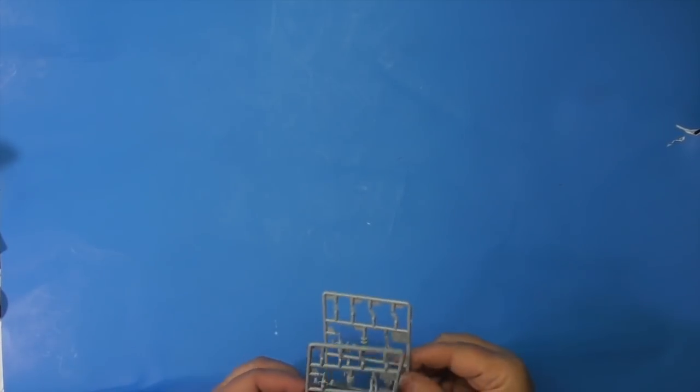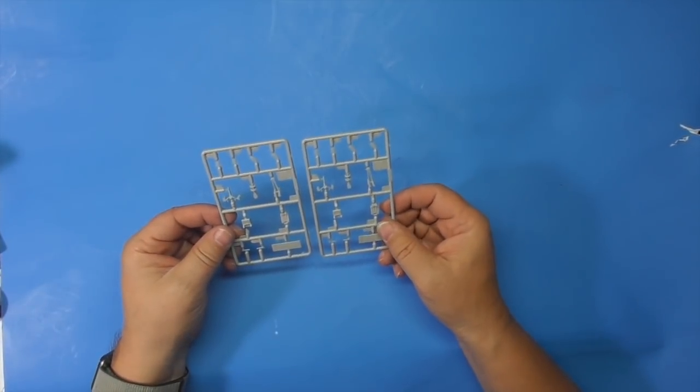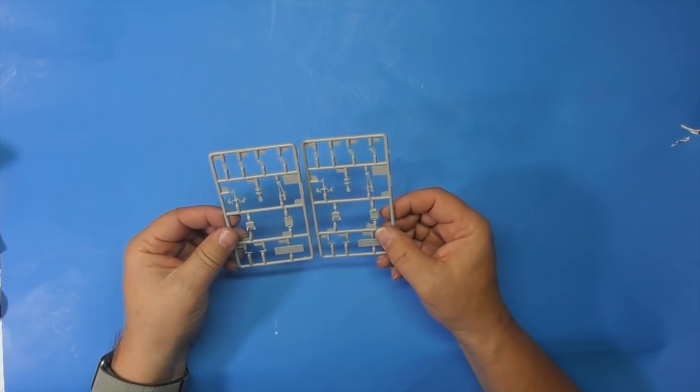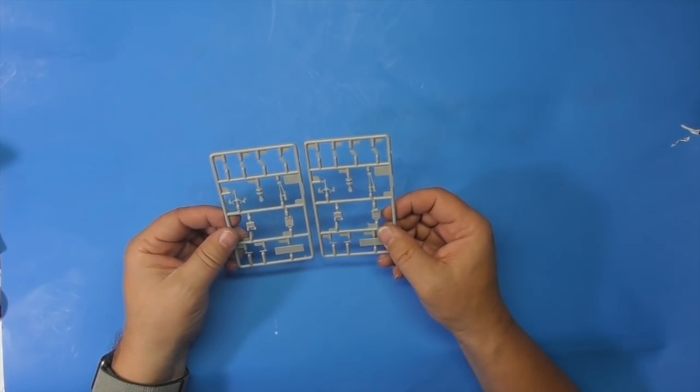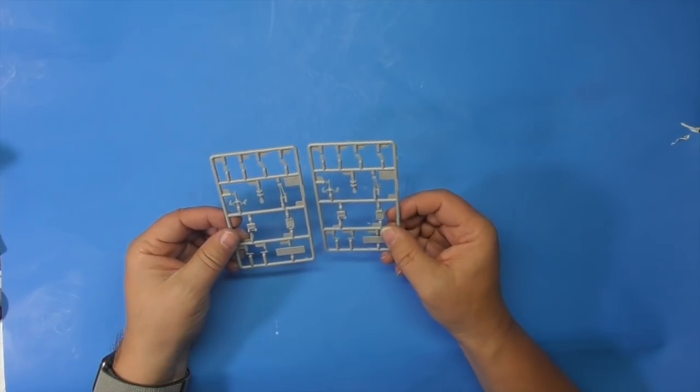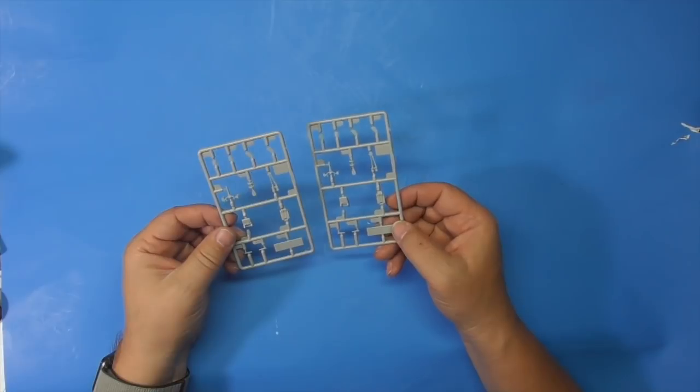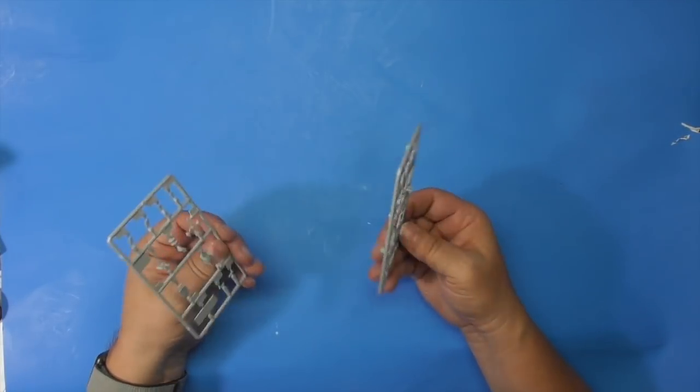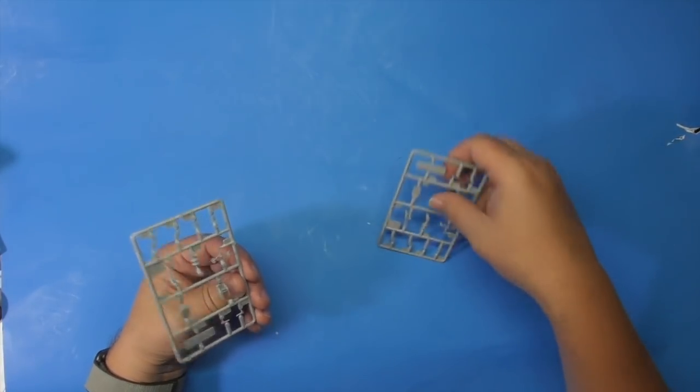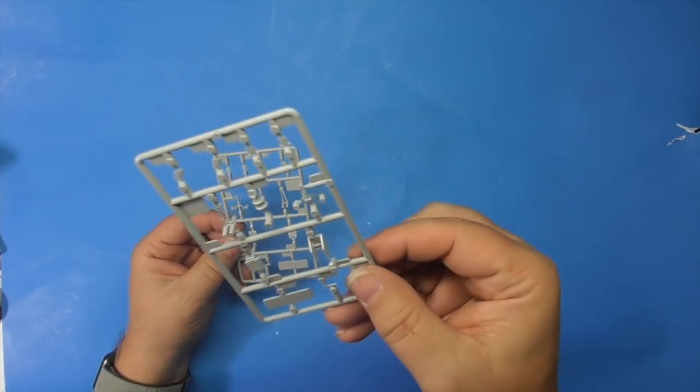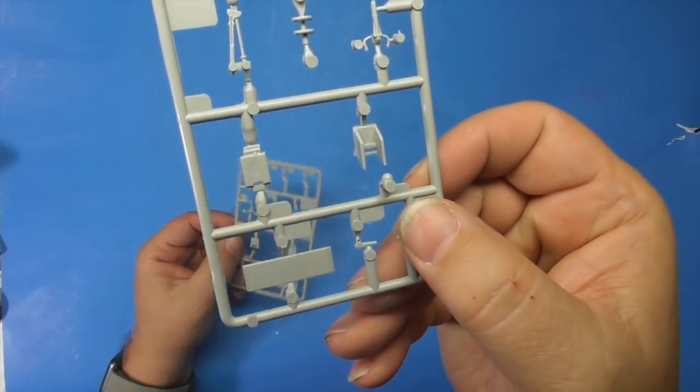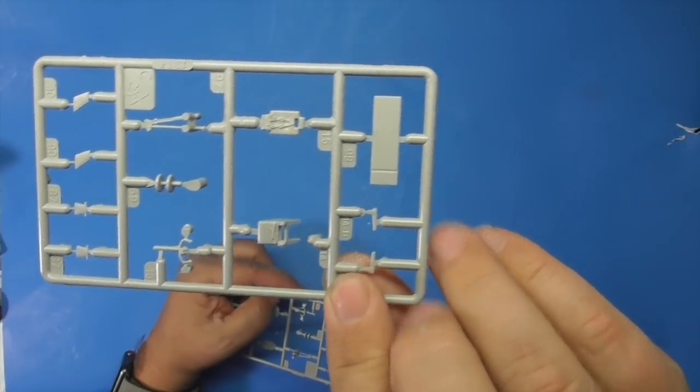And then we've got seats and control sticks. Nice looking seats with belts molded in. Control sticks, no burring, more antennas. I'm not sure what these are. Seat backs are in one piece. Very good detail front and back for the seats. I guess they don't have ejection seats in those.